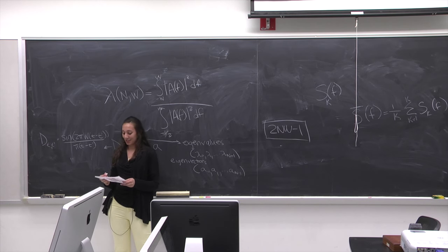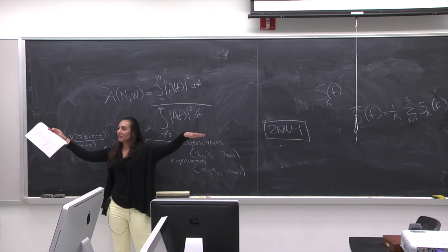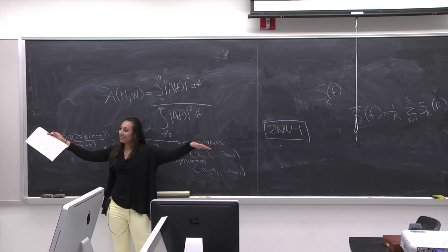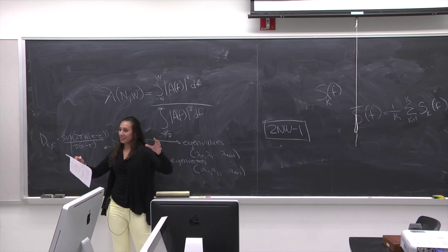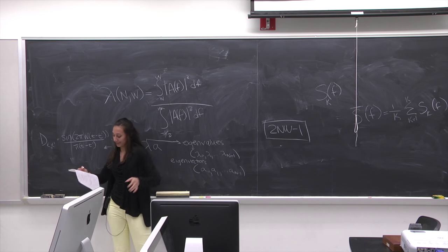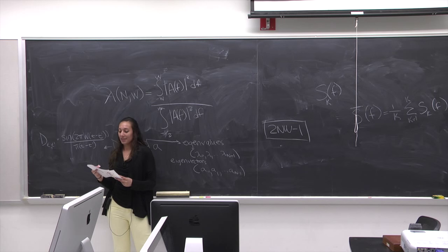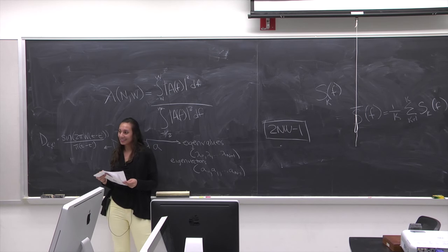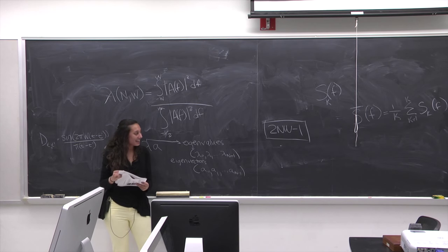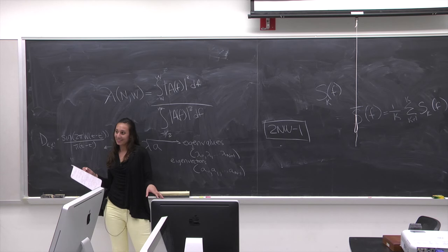Even though you can reduce variance by averaging across all these tapers, you're not necessarily helping after a certain point — you're actually hurting. Even that number 2NW − 1 is not necessarily a perfect fit, so the best way to explain this is through an example. Let me pull down the screen.